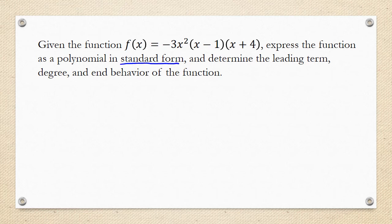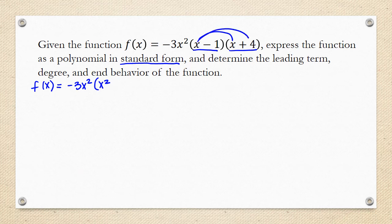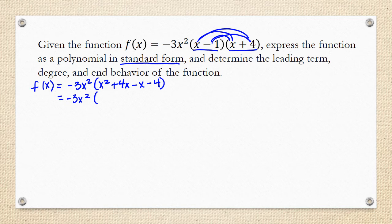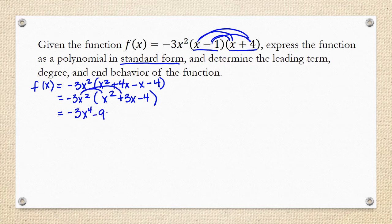To put this into standard form, the first thing we need to do is expand it. I'm going to first multiply x minus 1 times x plus 4. When I do that, I get x times x which is x squared, x times 4 which is plus 4x, negative 1 times x which is negative x, and negative 1 times positive 4 which is negative 4. Simplifying inside the parentheses gives x squared plus 3x minus 4. Then I distribute the negative 3x squared through to get negative 3x to the 4th minus 9x to the 3rd plus 12x squared.